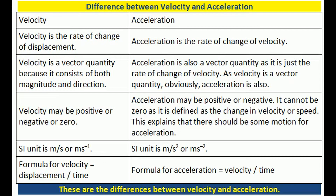Acceleration cannot be zero, as it is defined as the change in velocity or speed — meaning there must be some motion for acceleration to exist. The SI unit of velocity is meter per second (ms⁻¹); the SI unit of acceleration is meter per second squared (ms⁻²). The formula for velocity equals displacement divided by time; the formula for acceleration equals velocity divided by time. These are the differences between velocity and acceleration.